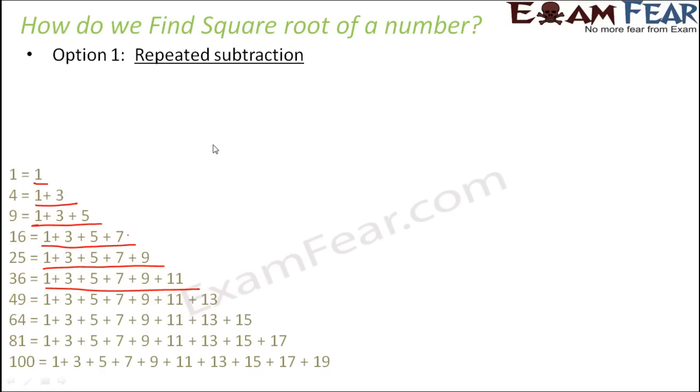So let us take one example. Let us say we consider the number 25. So you have to find out the square root of 25. So what are we going to do? We are going to subtract odd numbers from 25.